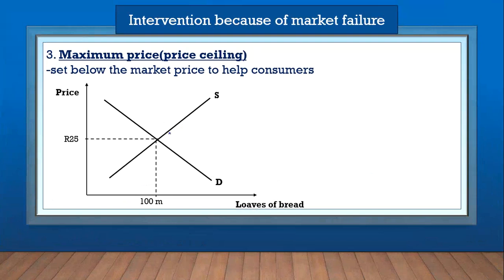Now let's look at a maximum price, also called a price ceiling. The price ceiling is introduced in the market to help consumers. Let's say the market forces have decided the equilibrium price for bread is 25 rands for a loaf, but the government decides that 25 rands is too high and some people will not be able to afford it. So the government can set a maximum price below the market price.